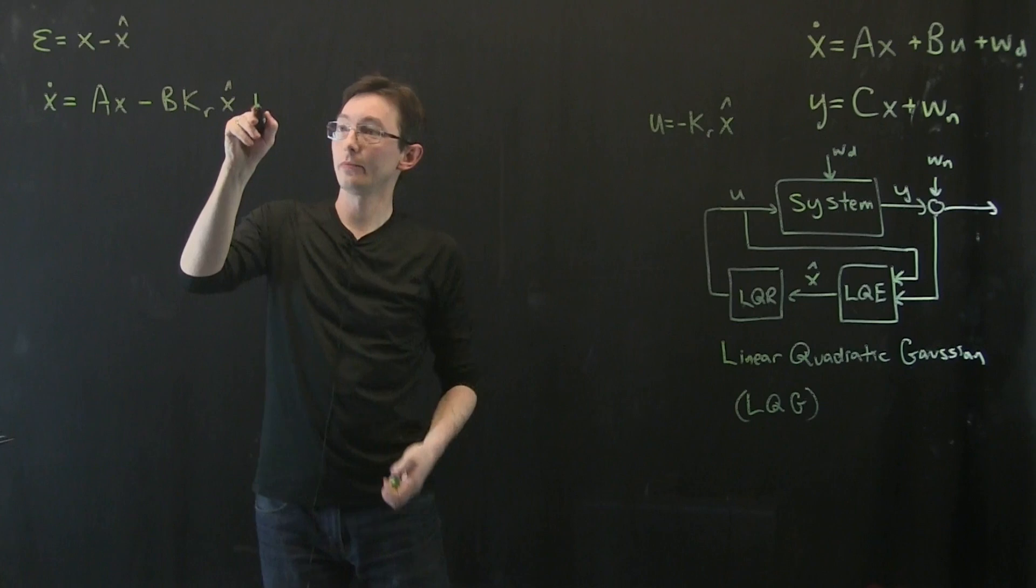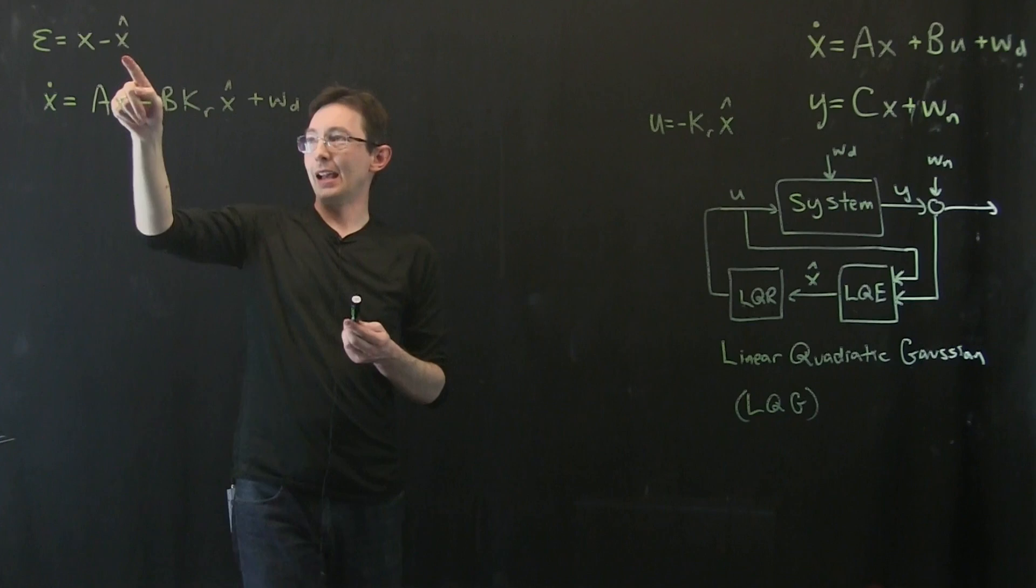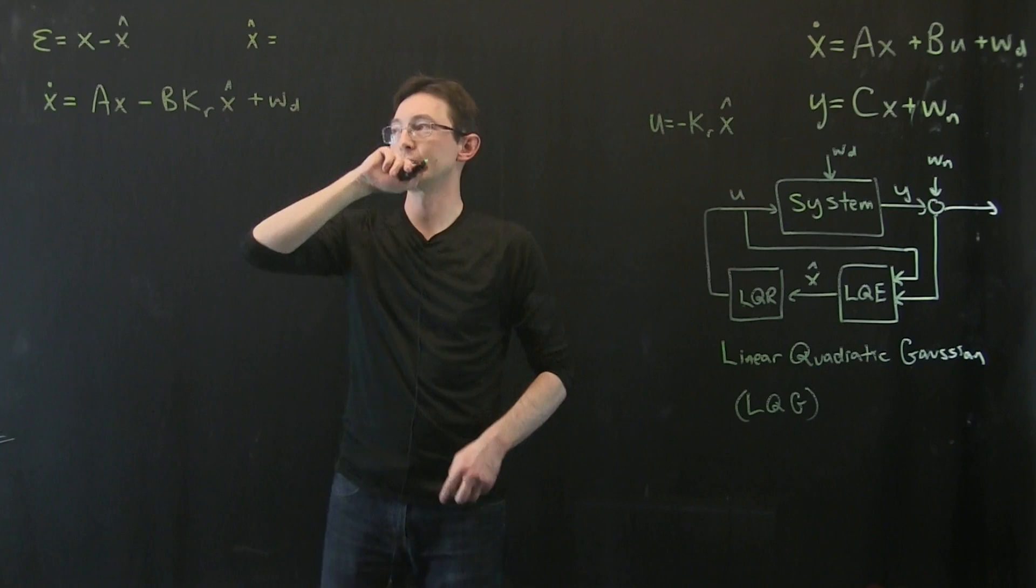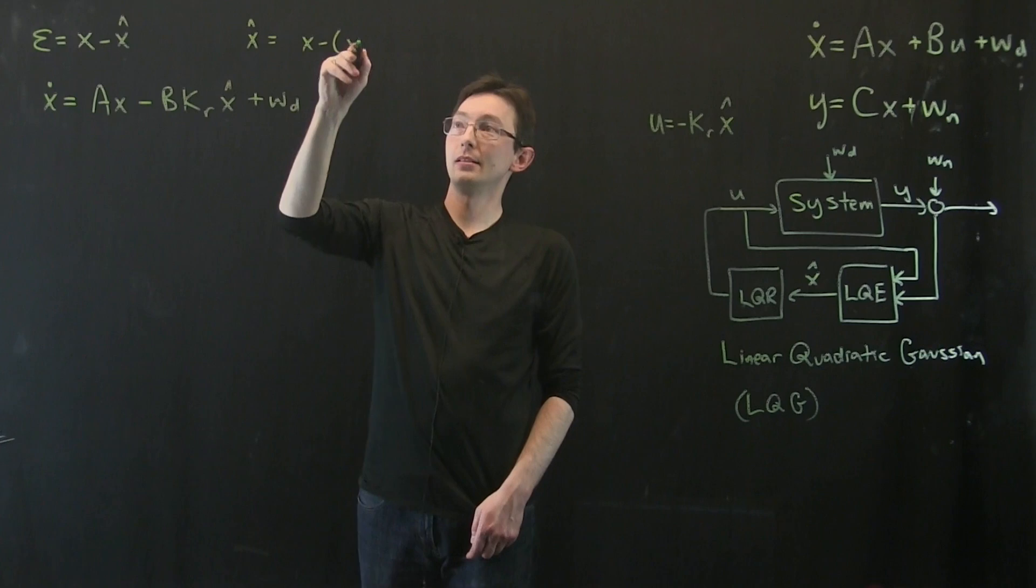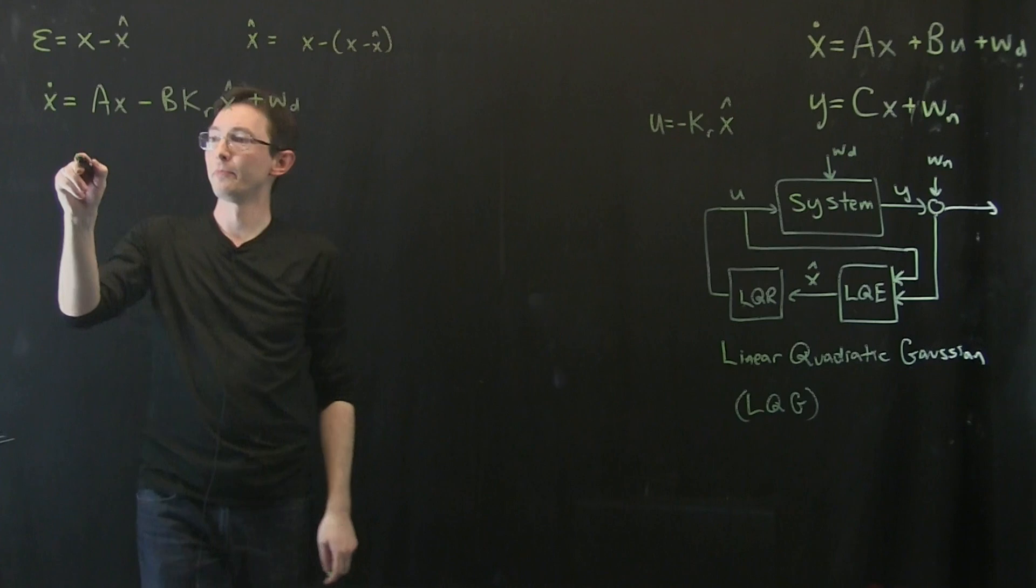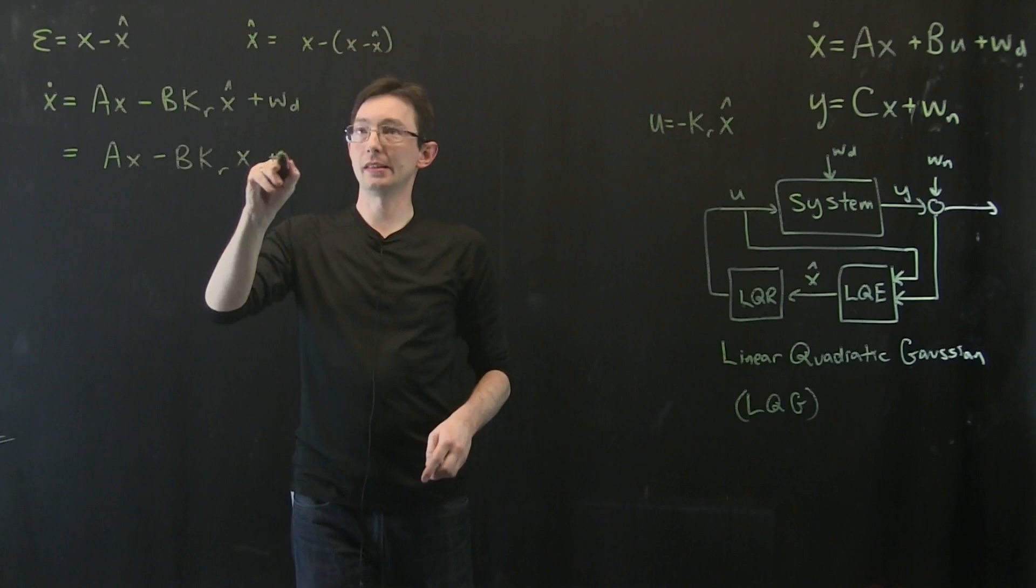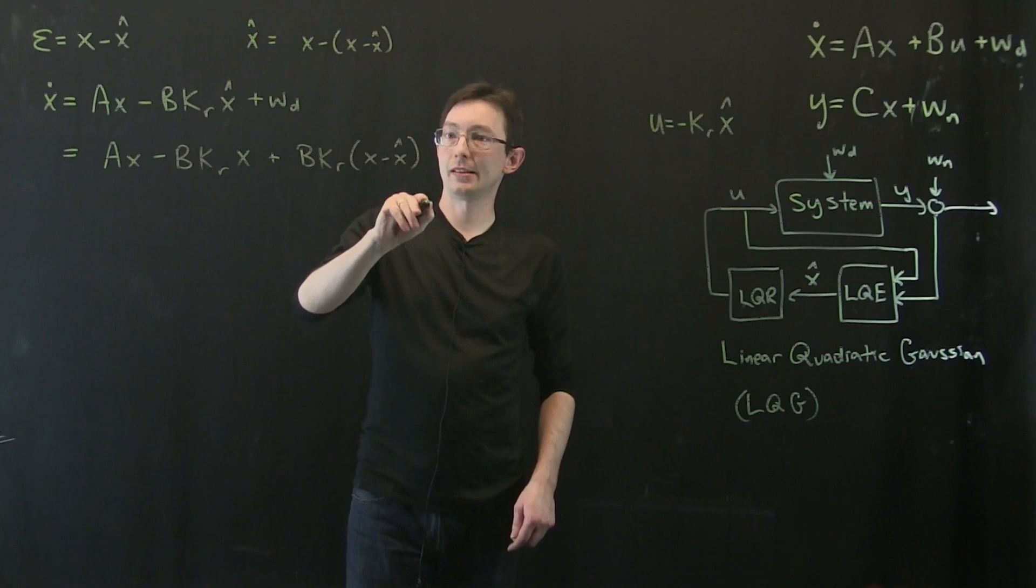Okay, and so now what we get to do is think to ourselves, well, what is x-hat? Well, x-hat, what I can do is I can essentially say x-hat is equal to x minus epsilon. Sounds reasonable, I think. And so I'm going to plug this in here. This is just an identity. I'm going to plug that in here. And I'm going to get ax minus b kr x minus minus is plus b kr times x minus x-hat plus wd. No big deal.